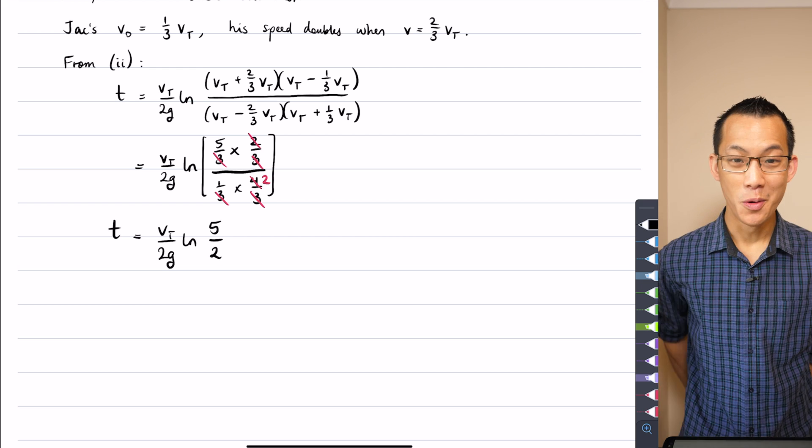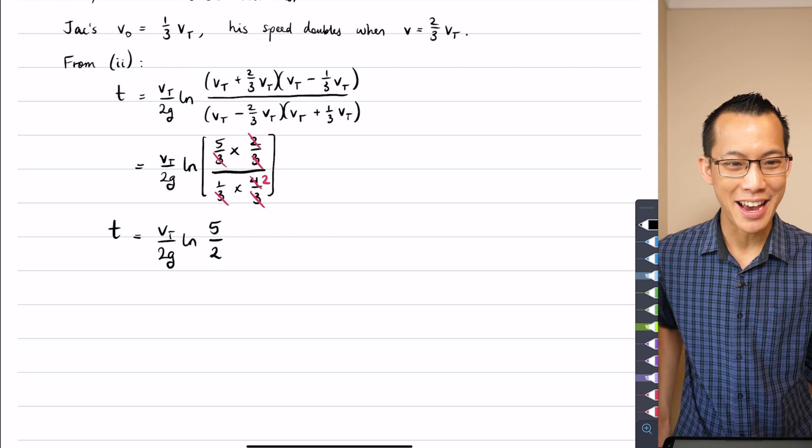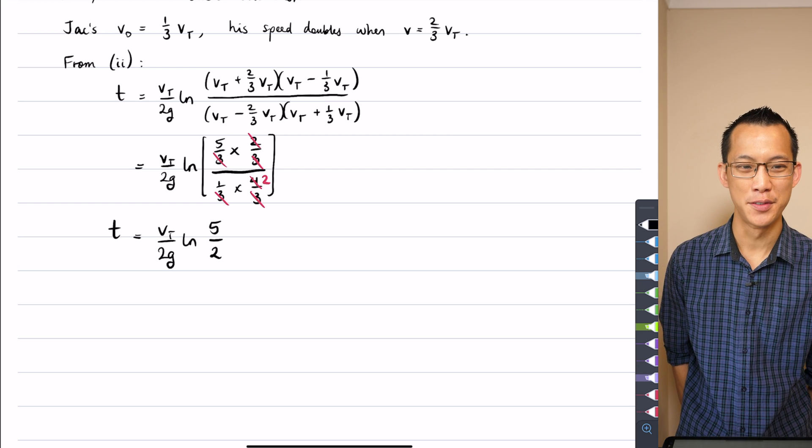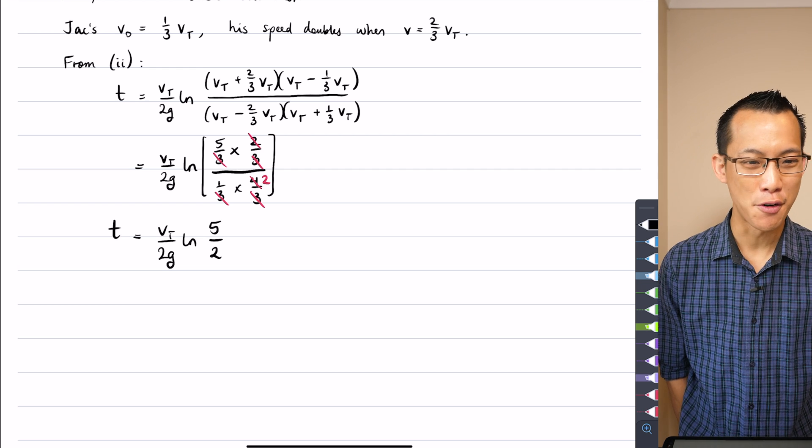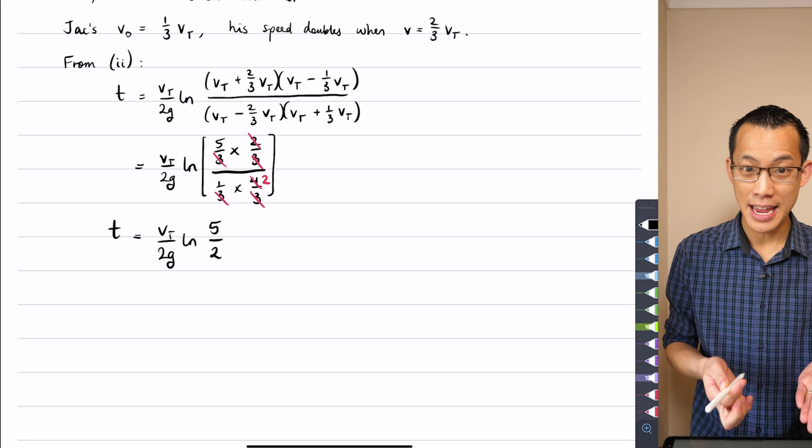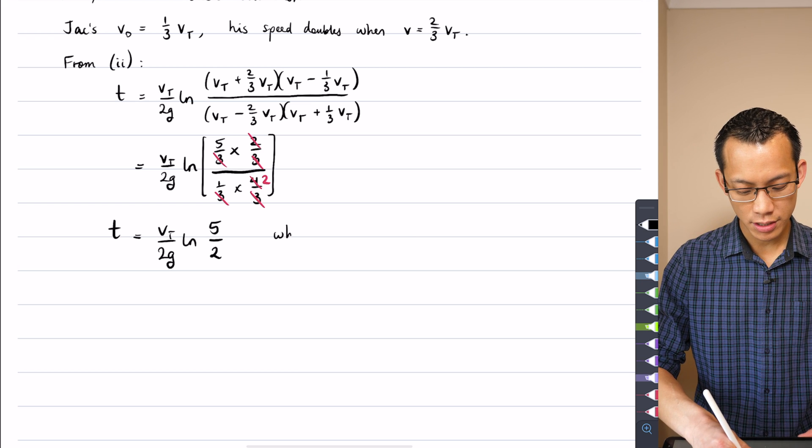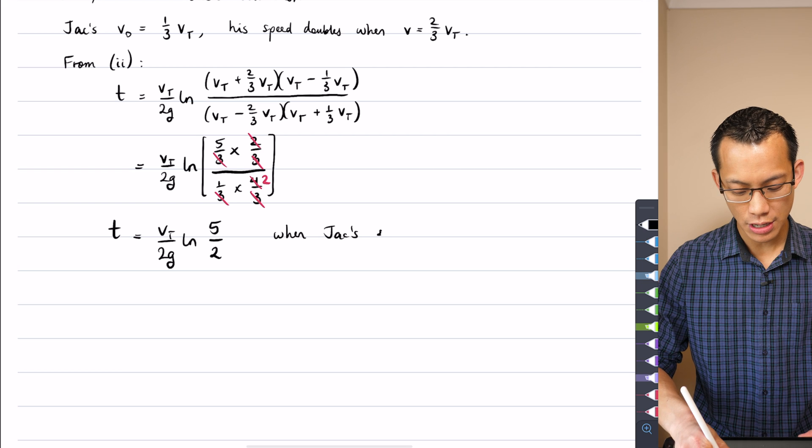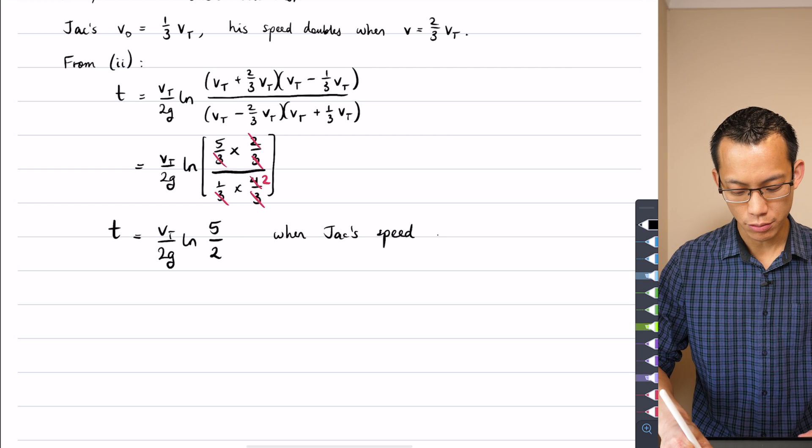That's the time. What's that equal to? No idea, because I actually don't have numbers for that terminal velocity. They haven't defined gravity for me either, but this is the time it takes for Jack's speed to double. So this is when Jack's speed doubles.